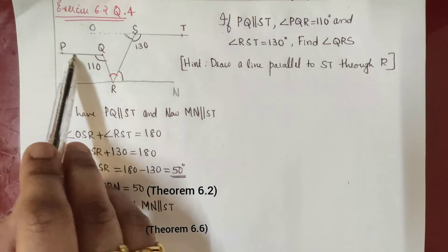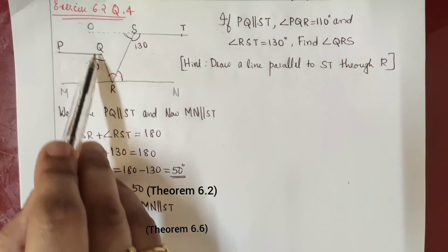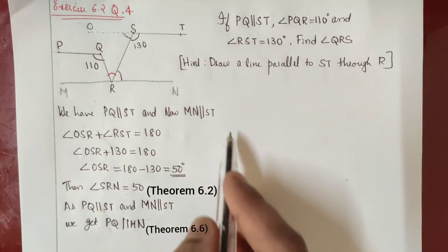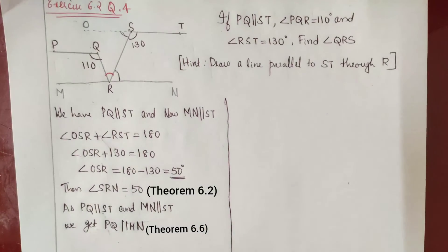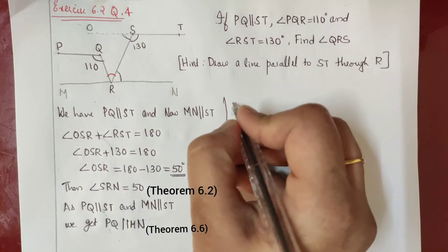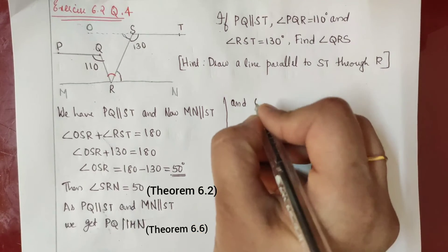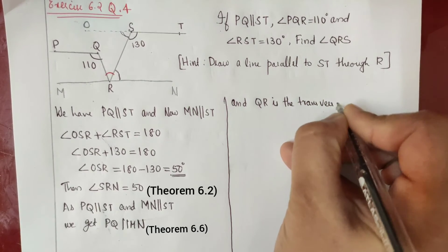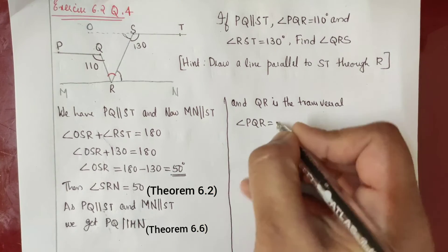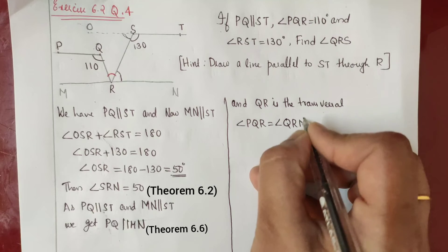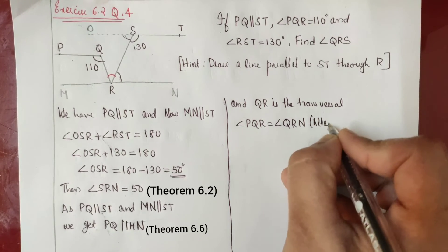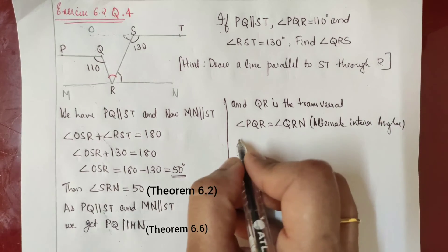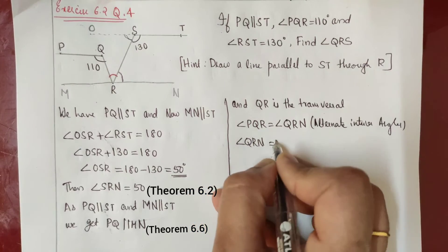PQ is parallel to MN, and QR is the transversal. So if angle PQR is 110 degrees, then the alternate interior angle QRN will also be equal to 110 degrees. Alternate interior angles are equal for two parallel lines. So we get angle QRN equal to 110 degrees.